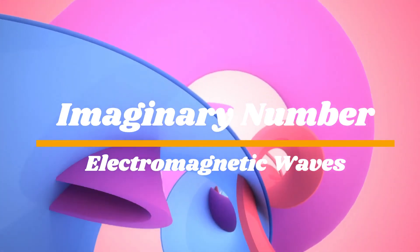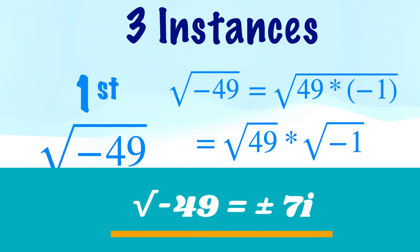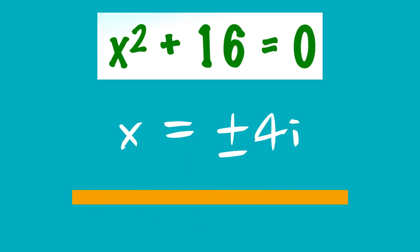This leads to the solution of three questions we had at the beginning of this video. Square root of minus 49 equals plus or minus 7i. X square plus 16 equals 0 has the solution of plus or minus 4i.